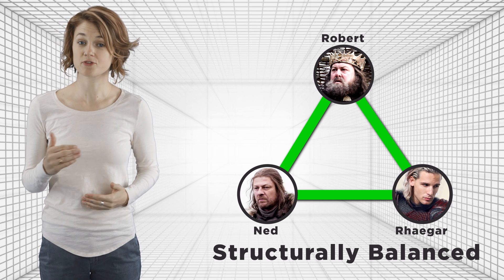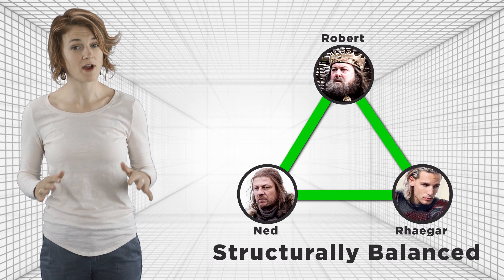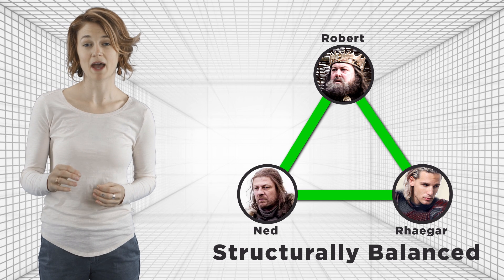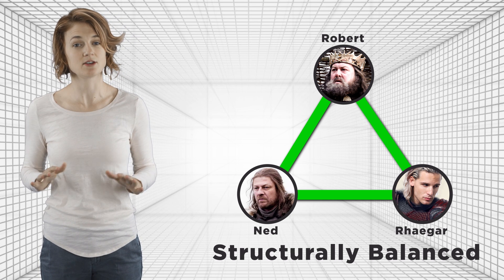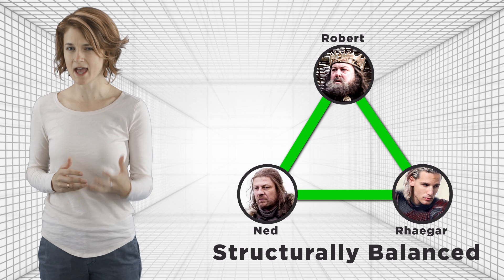If the triangle has three green edges—Ned, Robert, and Rhaegar are all friends—then the triangle is balanced. Everyone is content, and no one has a reason to change from friends to enemies.